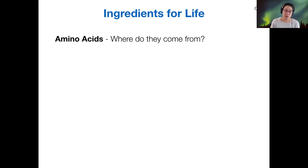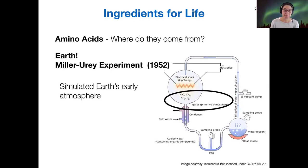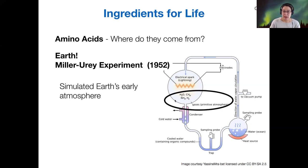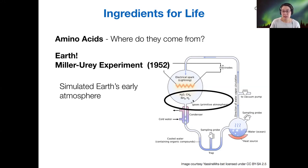The question is: where do those amino acids come from? If we need proteins to build life and we need amino acids to build proteins, then how do we get the amino acids? There was an experiment in the 1950s that tried to figure out how we could generate amino acids in an earth-like environment — similar to early earth. This is called the Miller-Urey experiment.